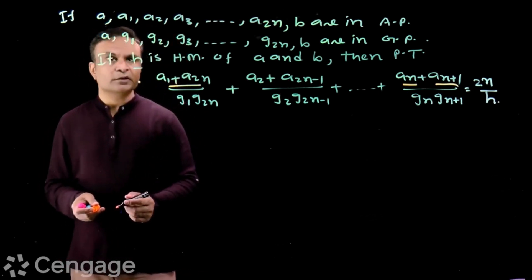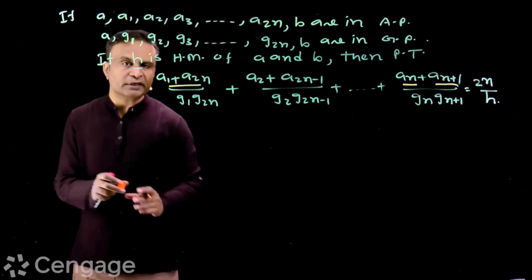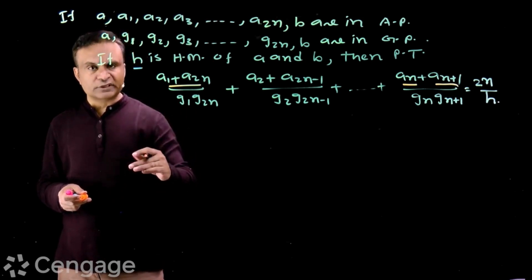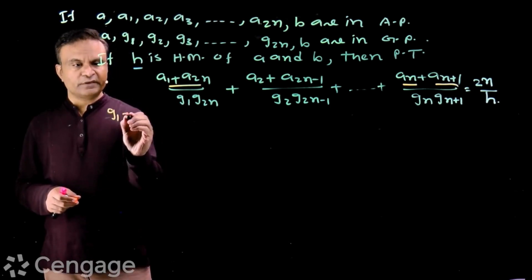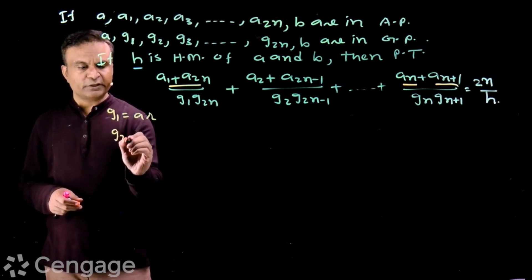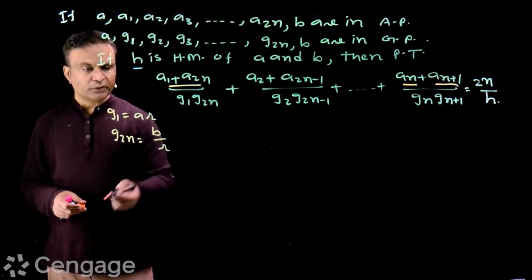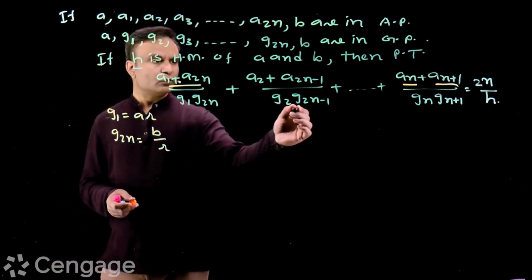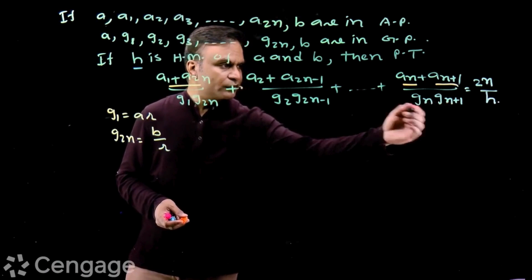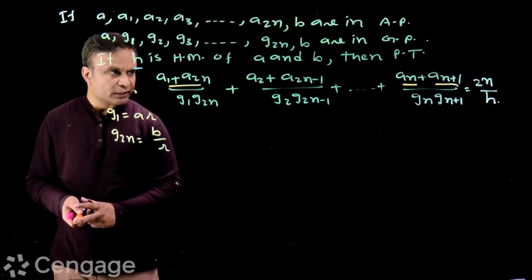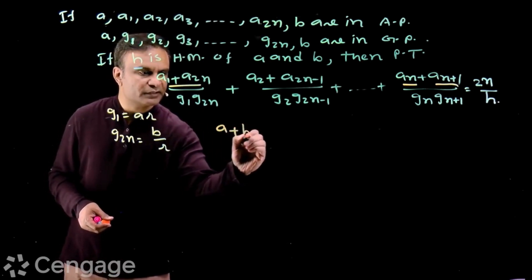Now let us check the denominators. What is g1 multiplied by g2n? This is equal to a multiplied by b. We have done this property in geometric progression: the product of the rth term from the start and rth term from the end is constant — that is, the product of the first term and last term. Here g1 = a·r and g2n = b/r, so g1 × g2n = ab. Similarly, g2 × g2n-1 = ab, and gn × gn+1 = ab. In fact, in each term the denominator is a multiplied by b. So each of these n terms is (a+b) over ab.